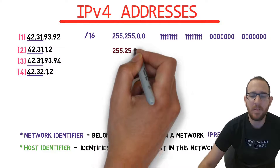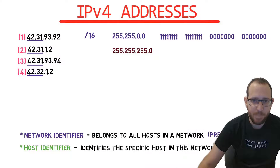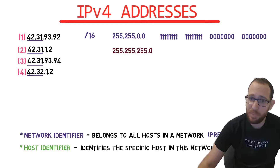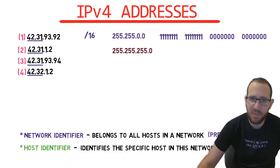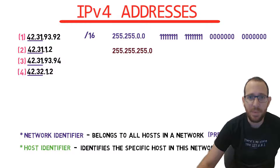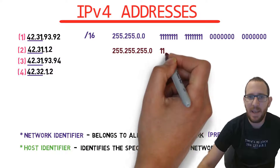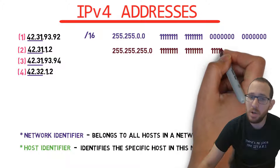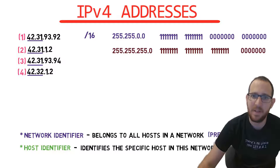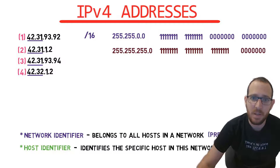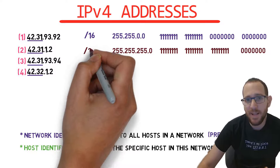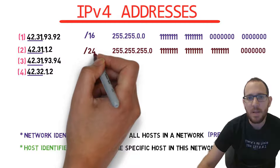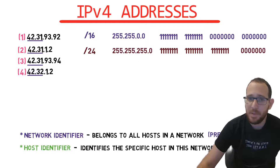Let's try the other way around. We have a subnet mask. How do we express it using a network prefix? We have 3 times 255 in decimal, which means 3 times 8 bits that are on. So overall we have 24 bits that are on, and we can write this as /24. This means 3 bytes.